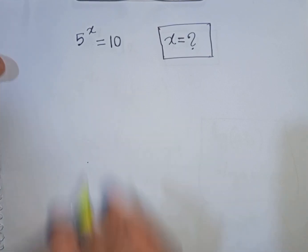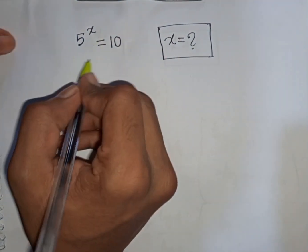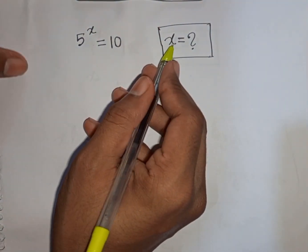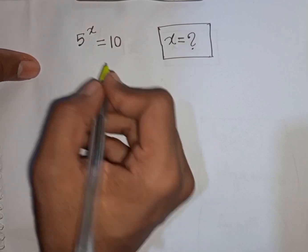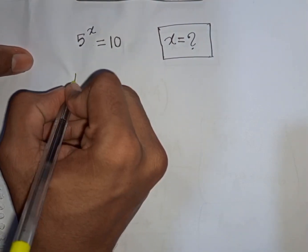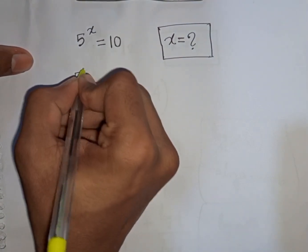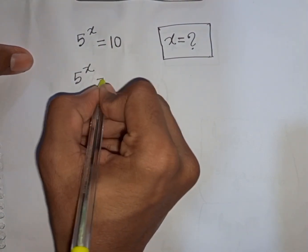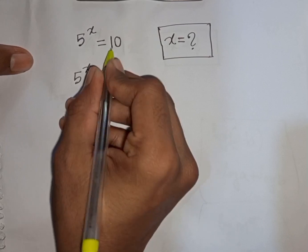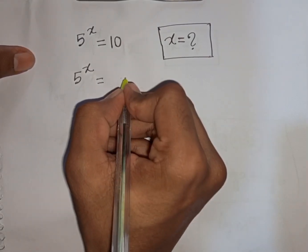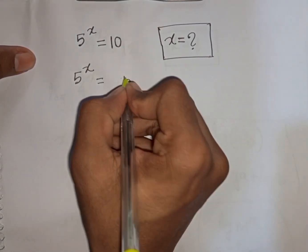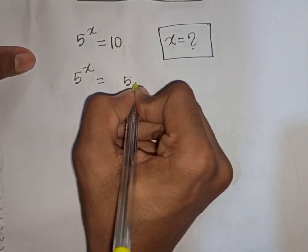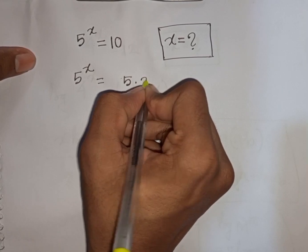How to solve 5 power x is equal to 10 — find the value of x. So we have 5 power x is equal to 10, which can be written as 5 times 2.